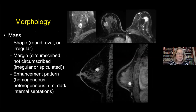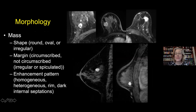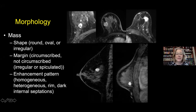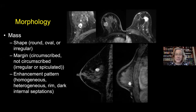For masses, we discuss the shape—round, oval, or irregular—the margin—circumscribed or not circumscribed (irregular or spiculated)—and the enhancement pattern—homogeneous, heterogeneous, rim enhancing, or with dark internal septations. These different enhancement patterns, shapes, and margins will indicate more likely benign versus malignant lesions. We'll discuss this further through cases.